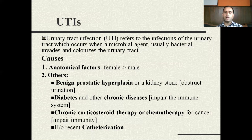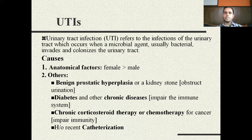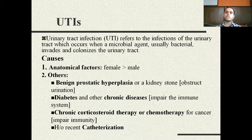The most important cause is the anatomical factor. Because of anatomical differences, women are more prone to urinary tract infections compared to men. The second cause of UTI is benign prostatic hyperplasia (BPH). Hyperplasia means an increase in the number of cells in the prostate region. Because the prostate enlarges, it becomes very difficult for the person to pass urine, causing stasis of urine in the urinary bladder, which favors bacterial growth, thereby resulting in UTIs.